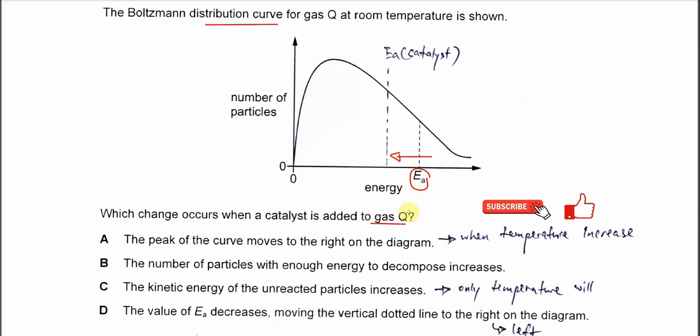Right, so now let's choose the best answer. The peak of the curve moves to right on the diagram. This one is the effect of temperature. When the temperature increases, the peak of this curve, the whole curve will shift to right and lower. So this is the effect of temperature. So A is not the answer.